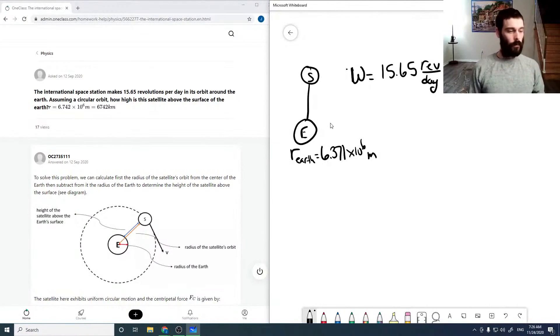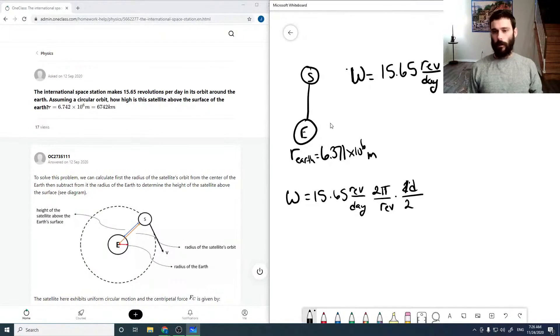So if we want the angular frequency first in the units we would want to deal with. So 15.65 revolutions per day. So there are 2 pi radians per revolution. And 1 day is 24 hours, and 1 hour is 3600 seconds. So multiplying by all these, we get 1.1381 times 10 to the minus 3 per second.